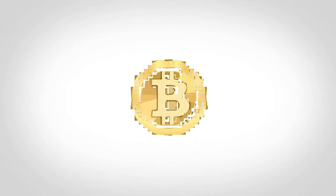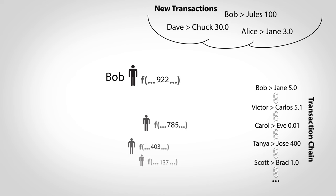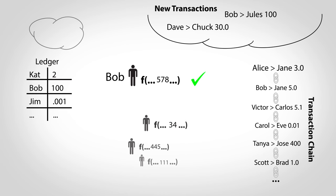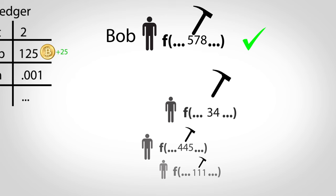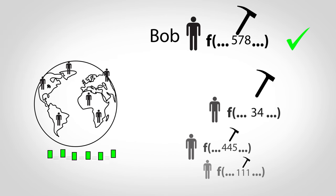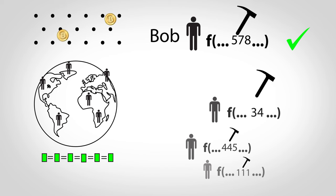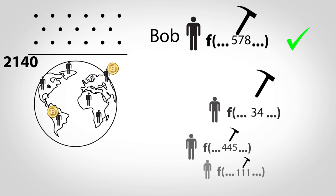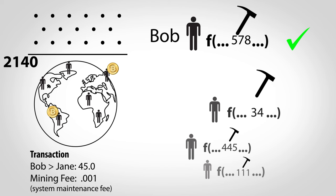Finally, how does money get created? Every time someone wins the lottery to pick the next transaction in the chain, new bitcoins are created out of thin air and awarded to their account. Solving these problems is commonly called mining, as this is how money enters the system, but the main purpose of the math is to make sure everyone's ledgers agree. The math simply provides a convenient way to randomly distribute money into the world. In fact, sometime around 2140, no more money will be created and participants will only be paid from fees added onto transactions.